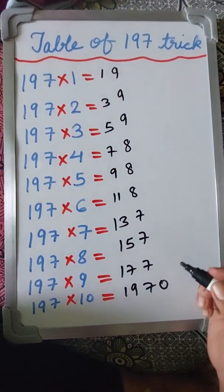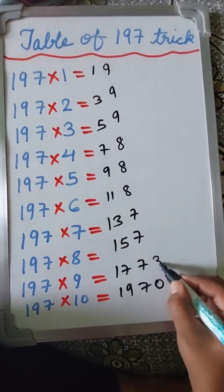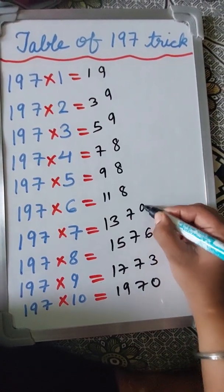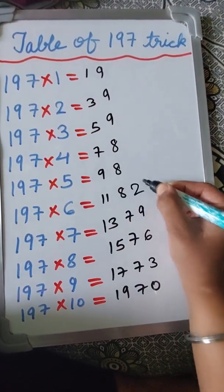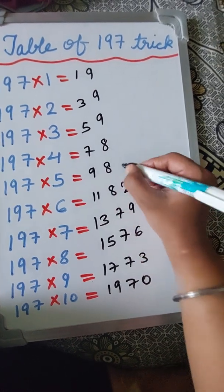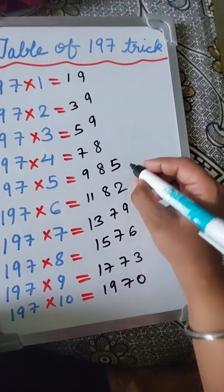and then write the unit digits of table of 3. 3×1 are 3, 3×2 are 6, 3×3 are 9, 3×4 are 12 - only unit digit - 3×5 are 15